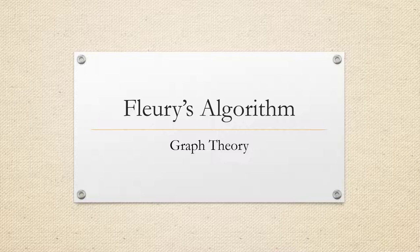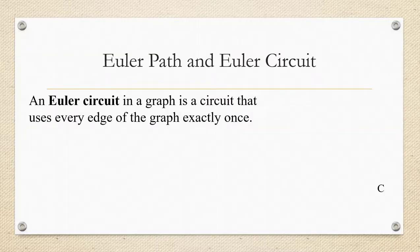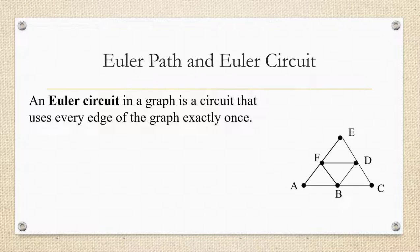Before we can go over Fleury's algorithm, we have to remember what we mean by an Euler circuit. So an Euler circuit in a graph is a circuit that uses every edge of the graph exactly once. So for example, in this graph, we could go from A to B, then to C, then to D, then to E.